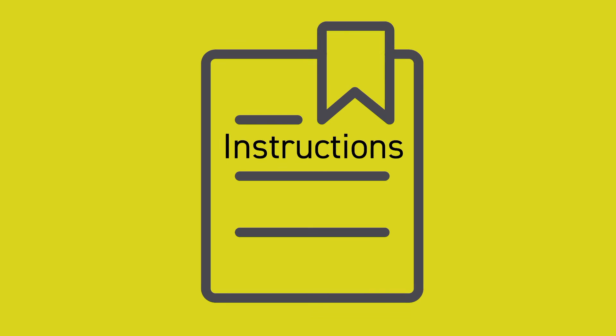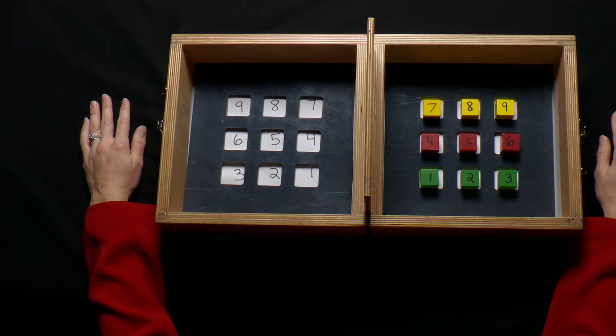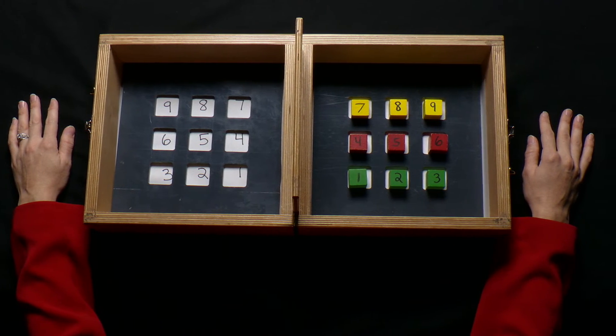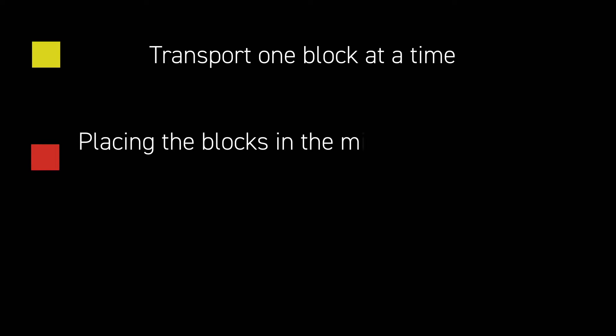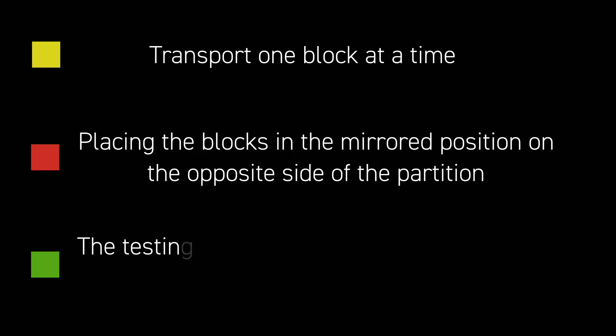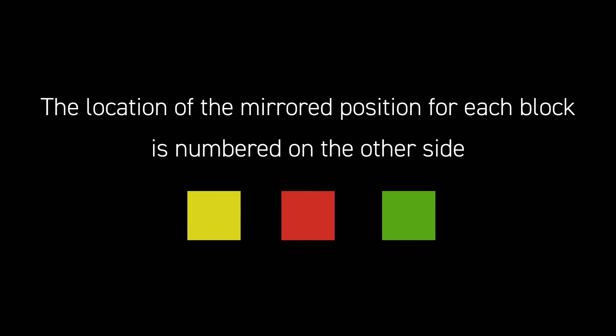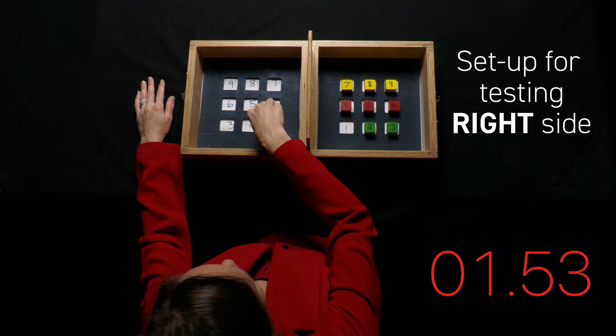The patient or participant will be instructed to place their hands on the sides of the box before testing begins. Patients or participants will be instructed to transport one block at a time, placing the blocks in the mirrored position on the opposite side of the partition. The blocks on the testing side are numbered in the order they should be picked up, and the location of the mirrored position for each block is numbered on the other side. The test administrator will say "ready, go" to prompt the patient or participant to start the test.